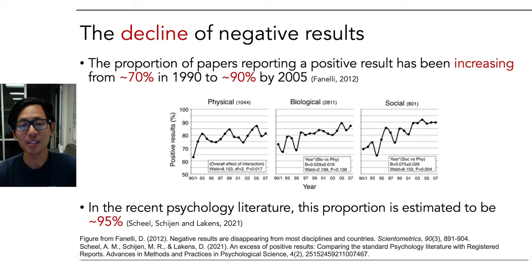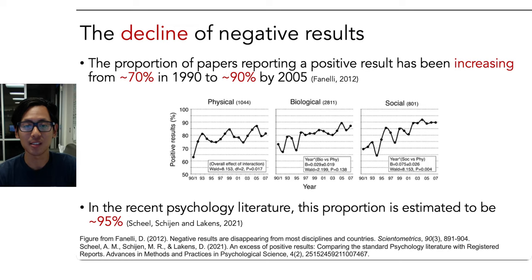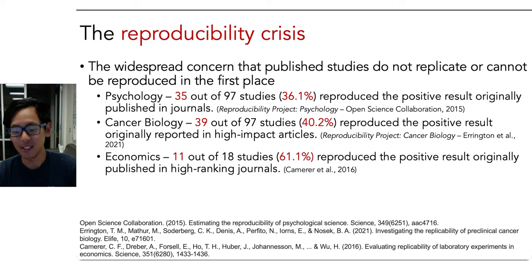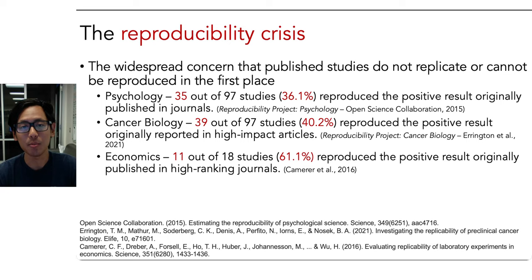In a recent estimate, the psychology literature seems to have a proportion of positive results close to 95%. This is concerning because it cannot accurately reflect the world. Scientists are not that successful with their experiments, and it's unlikely this reflects all true effects in the world. This led to science undergoing a reproducibility crisis — the widespread concern that published studies do not replicate or cannot be reproduced.